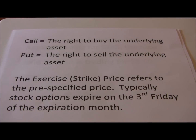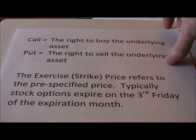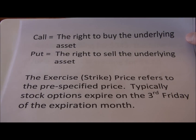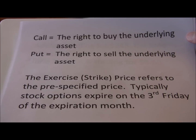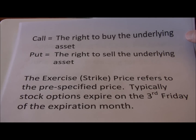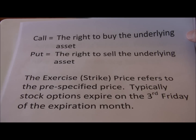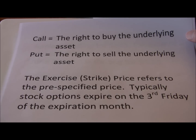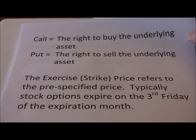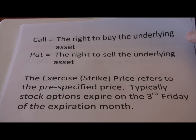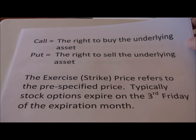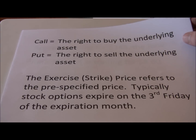The two basic types of options are call options and put options. A call option is the right to buy the underlying asset — again, typically shares of common stock. A put option is the right to sell the underlying asset. It's very important to get the terminology down. You have to get to the point where when you hear the terms call and put, you immediately understand that a call is the right to buy and a put is the right to sell. The quicker you understand those terms, the quicker you'll pick up options.